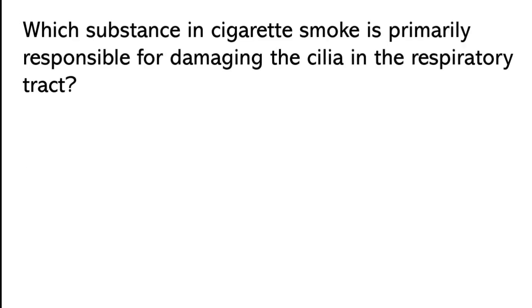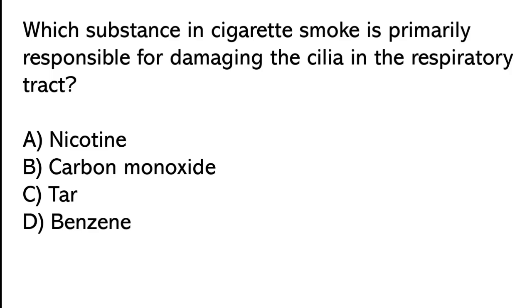Which substance in cigarette smoke is primarily responsible for damaging the cilia in the respiratory tract? Options: nicotine, carbon monoxide, tar, benzene. The correct answer is option C. Tar is the substance in cigarette smoke primarily responsible for damaging the cilia in the respiratory tract.